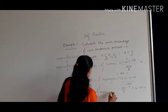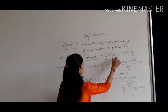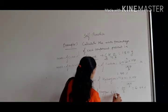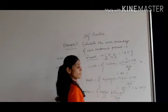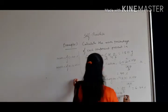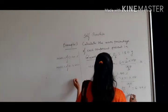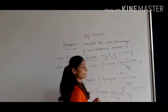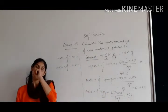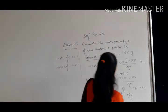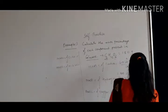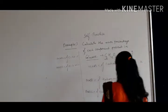Now for the mass percentage of oxygen: that is equal to 6 into 16 into 100 upon 180, which gives 9600 upon 180. That comes equal to 53.33 percent of oxygen.